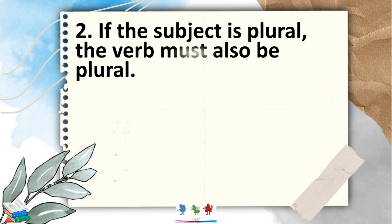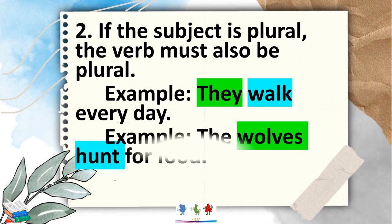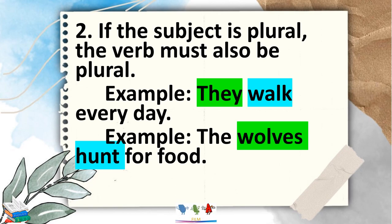Rule number 2: if the subject is plural, the verb must also be plural. For example, 'They walk every day.' They is plural and walk is also plural. Another example: 'The wolves hunt for food.' Wolves is the subject, which is plural, and the verb is 'hunt,' which is also plural.